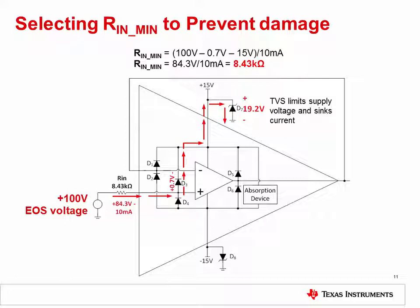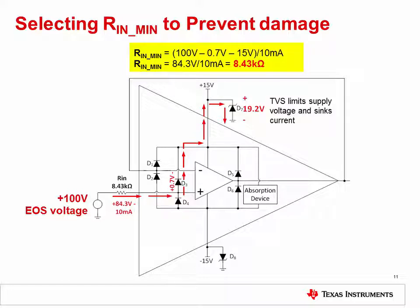The last step to developing effective EOS protection is to choose the current limiting resistance in series with the input. First, pick a worst case EOS voltage — 100 volts in this example. Second, do a voltage walk through the path of current flow to determine the voltage drop across the resistor. In this example, the 100 volts is distributed across RN, D3, and D7. D3 has about 0.7 volts of voltage drop, and D7 has a 19.2 volt drop based on its fault voltage, so 84.3 volts remains across the resistor. The absolute maximum current flow into the amplifier before EOS damage is 10 milliamps. Using Ohm's law, the minimum resistor value based on 84.3 volts and 10 milliamps results in 8.43 kilohms. Note that increasing the resistance will improve the protection, but may cause other performance trade-offs.